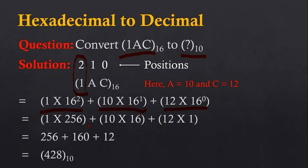Their multiplication results are added, and the final outcome is 428. So the hexadecimal number 1AC is converted into decimal, and its decimal equivalent is 428.